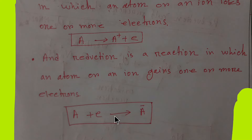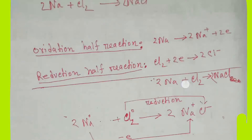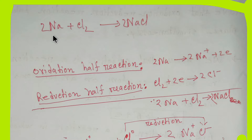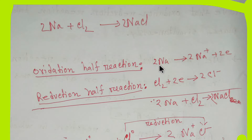If that happens, the oxidation state of that atom or ion will reduce. Here you see sodium plus chlorine giving us sodium chloride. The oxidation state of sodium is zero and the oxidation state of chlorine is zero on the reactant side, but here the oxidation state of sodium is plus one and the oxidation state of chlorine is minus one.